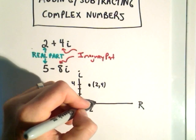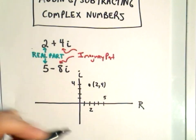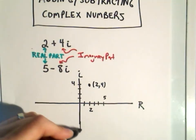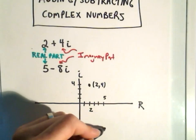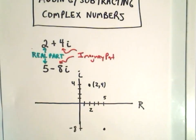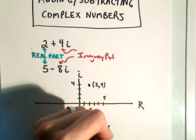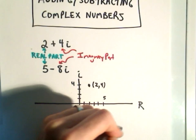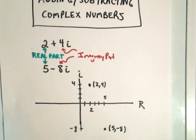Likewise, we could go to 5 on the real axis and then down to negative 8, and that point on the graph would represent the complex number 5 minus 8i.